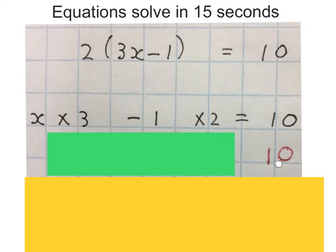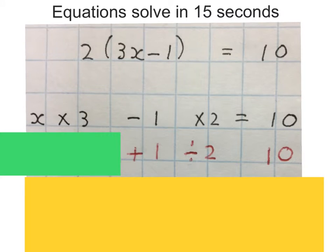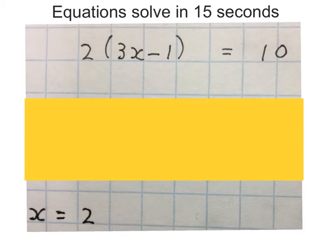I take the 10, do the opposite of times 2, so I divide by 2, which is 5. Then I do the opposite of minus 1, which is plus 1, which gives me 6. Then I do the opposite of times 3, so I divide by 3, and it gives me 2. We don't write any of this — we just immediately divide by 2 (which is 5), plus 1 (which is 6), divide by 3 (which is 2).